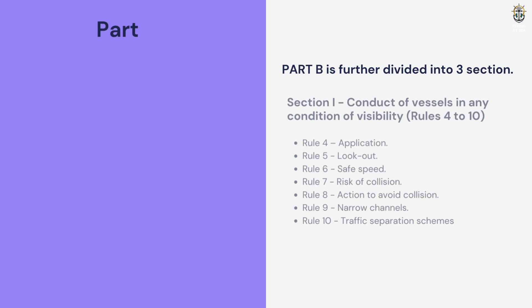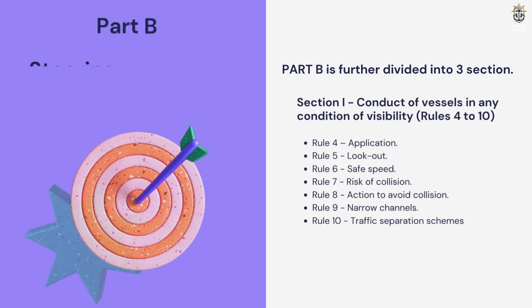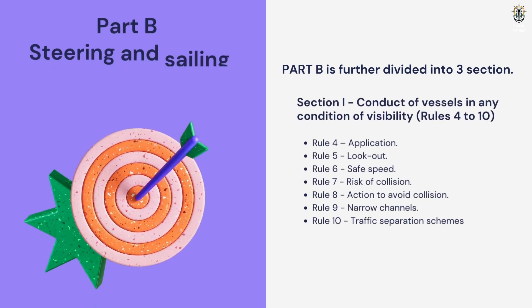Part B, Steering and Sailing. It covers from Rules 4 to 19. This part is further divided into three sections. Section 1, Conduct of Vessels in Any Condition of Visibility. It covers from Rules 4 to 10.